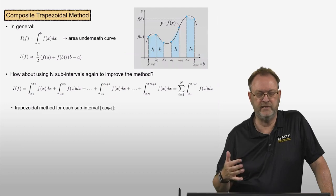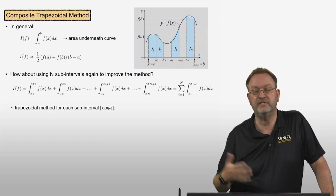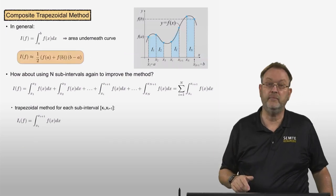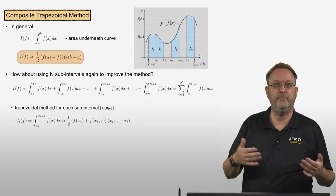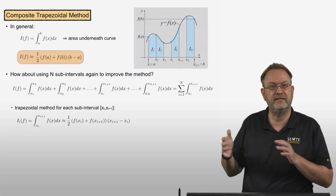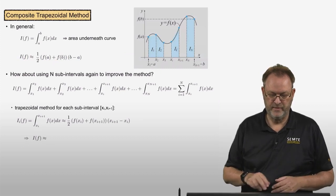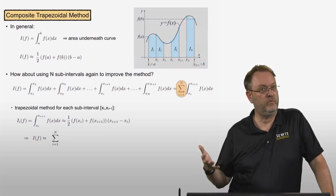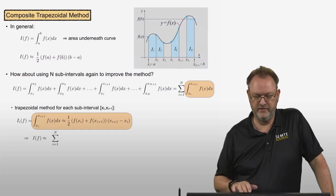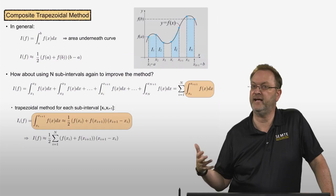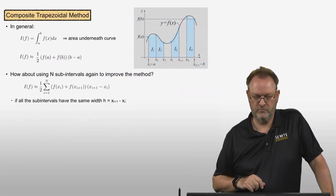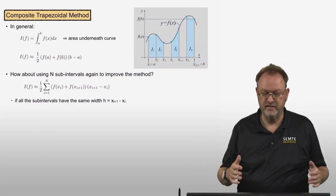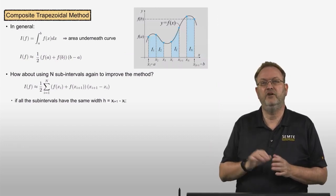Applying the trapezoidal method to each subinterval xi to x_{i+1}: the ith subinterval contributes one-half times (f(xi) + f(x_{i+1})) times (x_{i+1} - xi). Substituting back, we approximate the area by the sum from i=1 to n of: one-half times (f(xi) + f(x_{i+1})) times (x_{i+1} - xi). Note this formula is valid even when data points are not equally spaced.